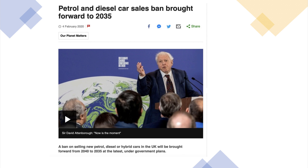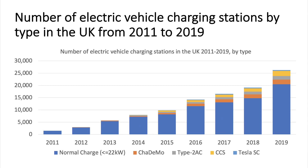Shown here is the UK government's announcement from February 2020 that the ban on selling new petrol, diesel, or hybrid vehicles will be brought forward by another five years. A key factor affecting demand will also be the availability, efficiency, and charges from electric vehicle charging stations. You can see the network of charging stations is growing, though whether that is sufficient to catapult demand to new levels is open to question.